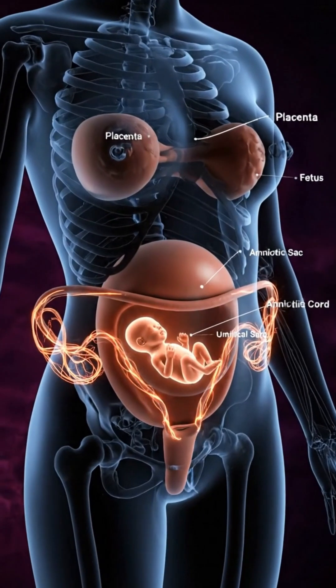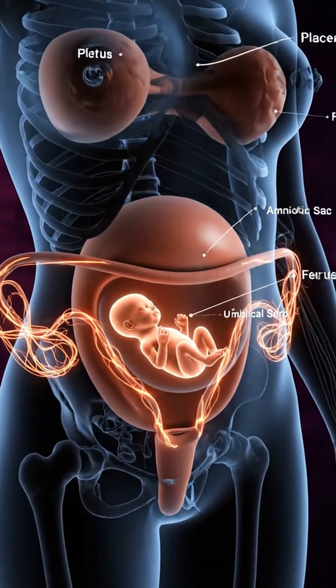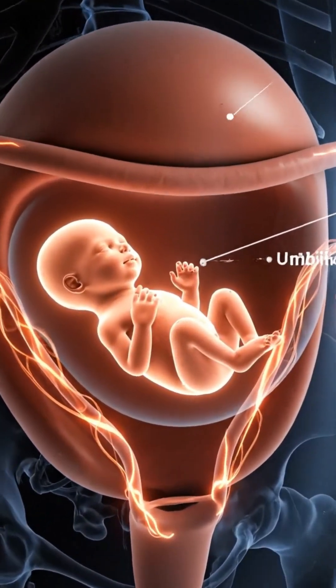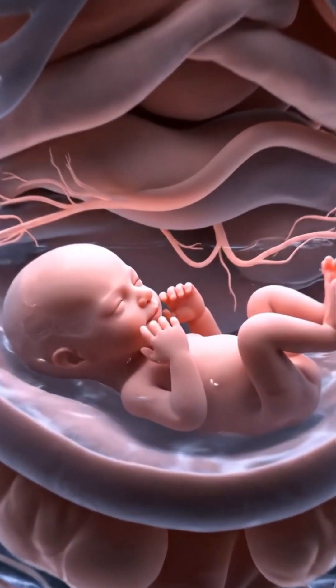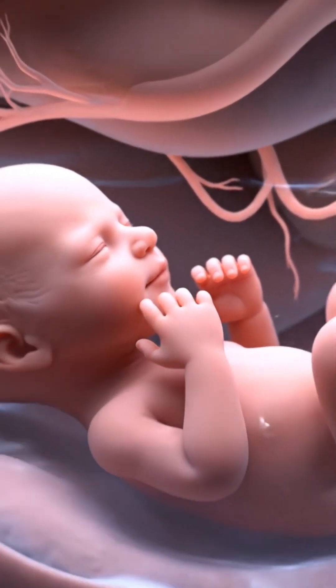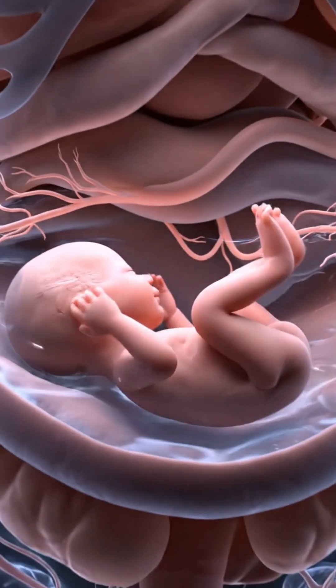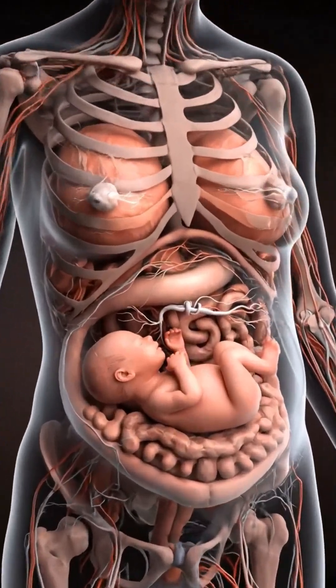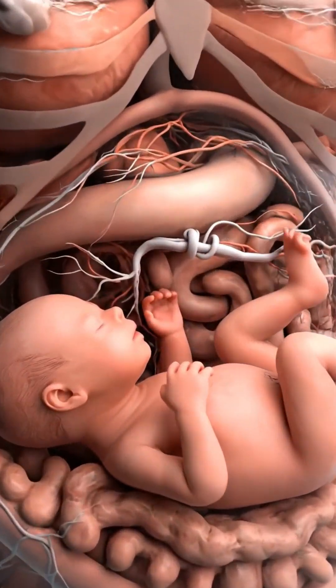Organs and limbs begin to form as the fetus grows inside the uterus. Movements become noticeable, and the fetus continues to develop rapidly. The fetus reaches full development.